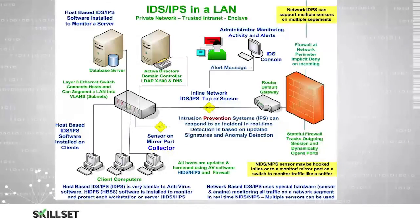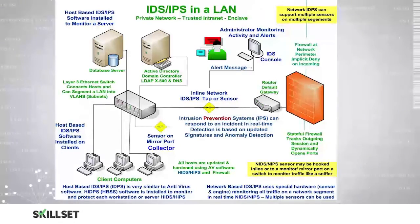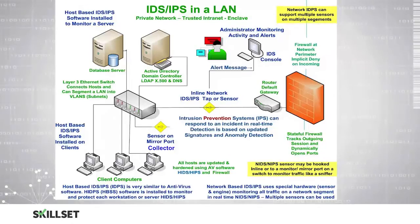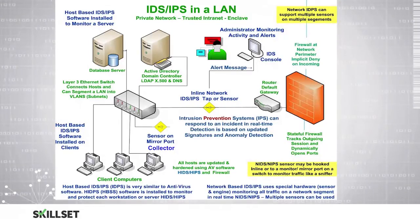Here we can take a look at a sample network that uses Intrusion Detection and Prevention Technology. We have host-based Intrusion Detection Systems and Intrusion Prevention Systems, which is software installed on our servers and our client computers in order to prevent intrusions from occurring. Our switch has a sensor or mirror port, which is able to collect the data from the switch and forward it to our IDS or IPS to look for any malicious traffic. We can also use an inline network IDS or IPS tap or sensor, which allows it to collect data as the data moves through the network.